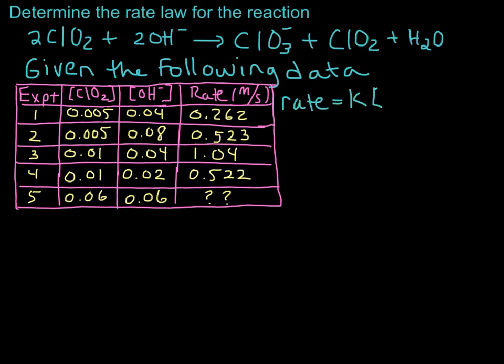So this is the general rate law, the concentration of chlorine dioxide raised to the second power because we found out it was second order in chlorine dioxide, and we also found out that it was first order in hydroxide.